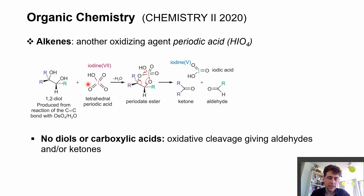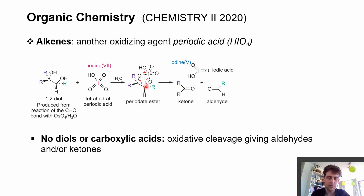If you react periodic acid with a diol that you've maybe produced from osmium tetroxide, you can get this addition reaction here. You get the periodate ester — the same structure as we've seen before — with iodine, oxygen, carbon, carbon, oxygen.